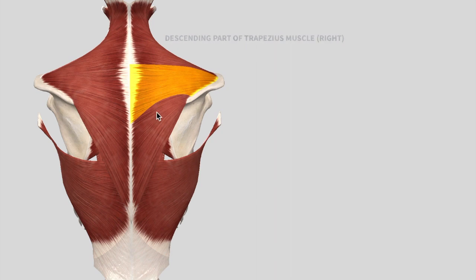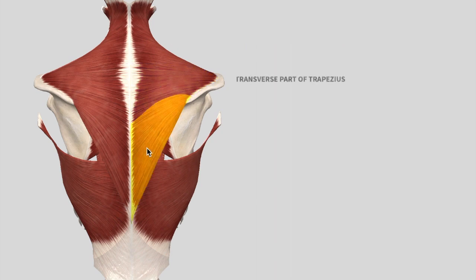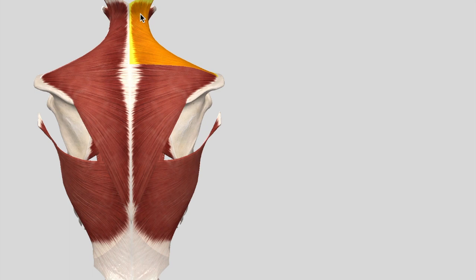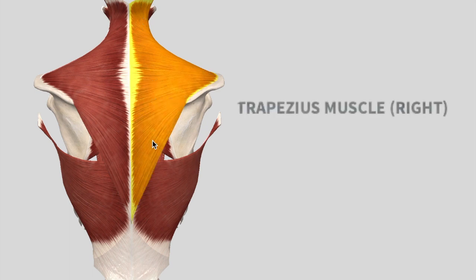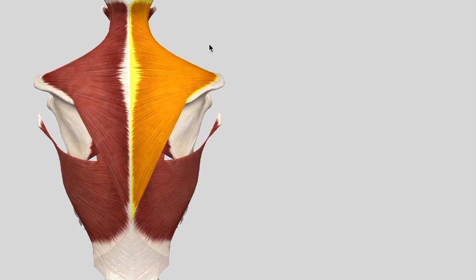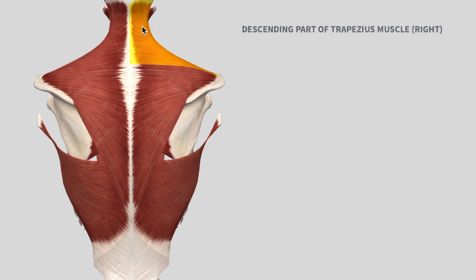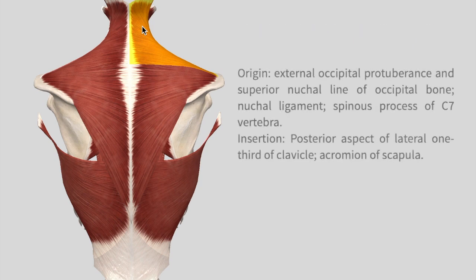You can see the descending part of the trapezius, then we have a transverse part and we also have an ascending part. So the trapezius is made up of three different parts: the descending, transverse, as well as the ascending — all three superficially making the trapezius muscle, which is the most superficial muscle of the back. The descending part of the trapezius muscle originates at the external occipital protuberance and inserts into the posterior aspect of the lateral clavicle and the acromion of the scapula.